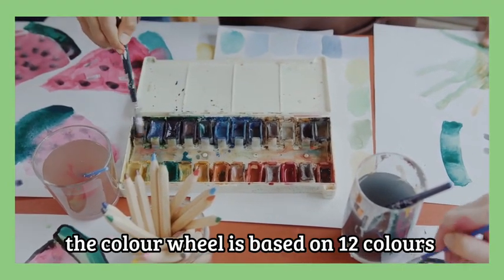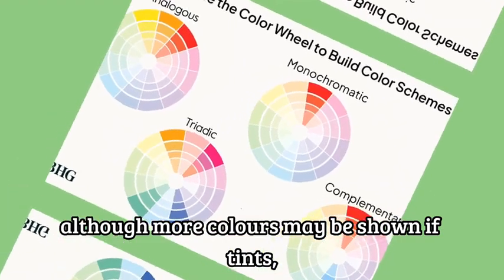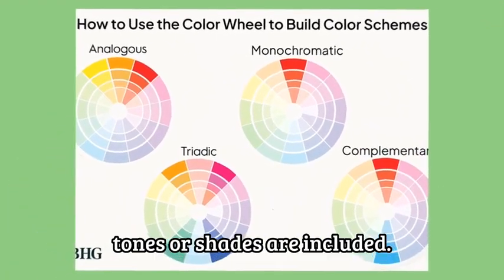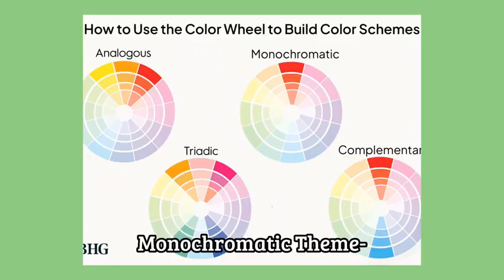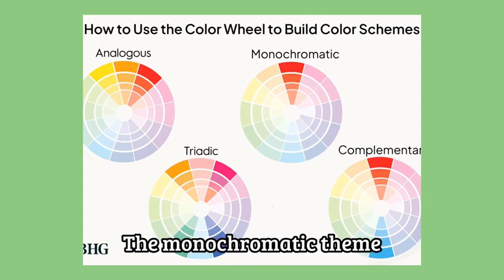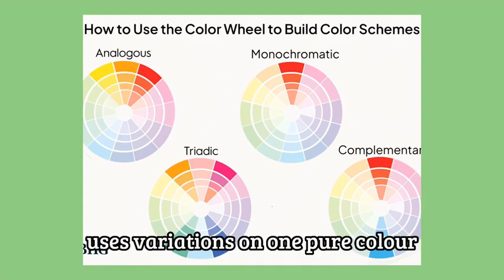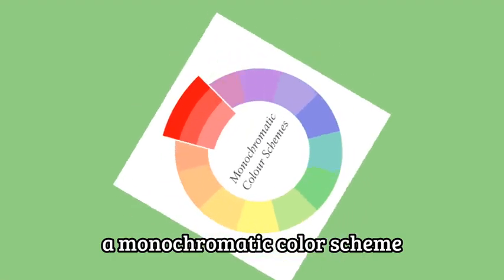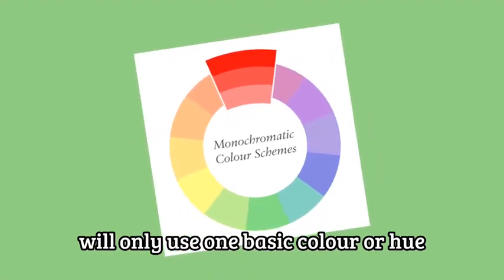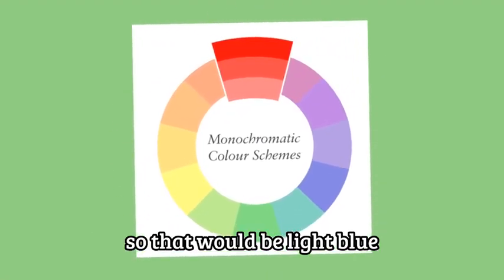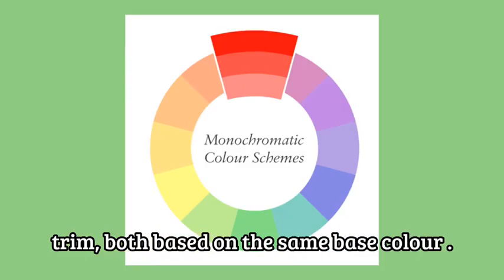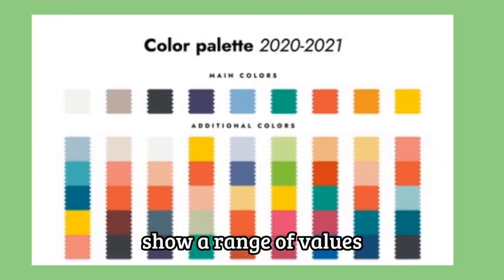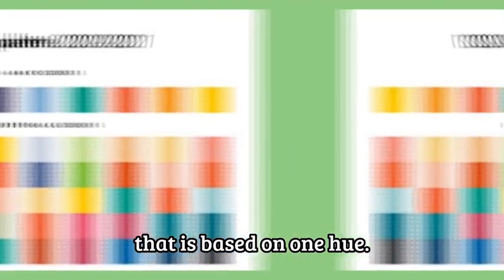The color wheel is based on 12 colors, although more colors may be shown if tints, tones or shades are included. The monochromatic theme uses variations on one pure color. A monochromatic color scheme will only use one basic color or hue — so that would be light blue walls with darker blue trim, both based on the same base color. Typical color strips from paint companies show a range of values on one strip that is based on one hue.